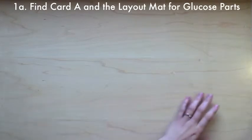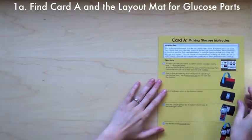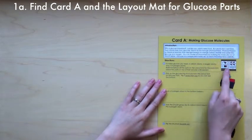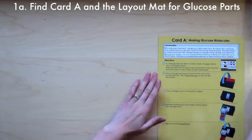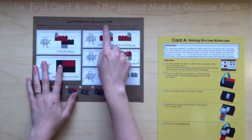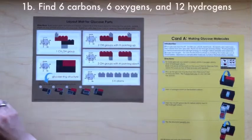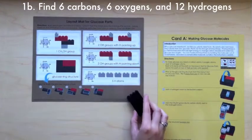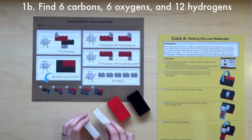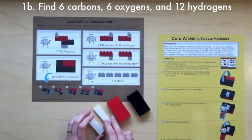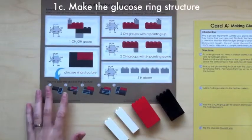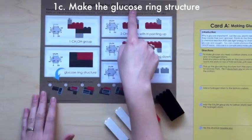Find Card A: Making Glucose Molecules. You will also need the layout mat for glucose parts. To make glucose you need 6 carbon atoms, 6 oxygen atoms, and 12 hydrogen atoms. Build and place all the parts on the layout mat for glucose parts.